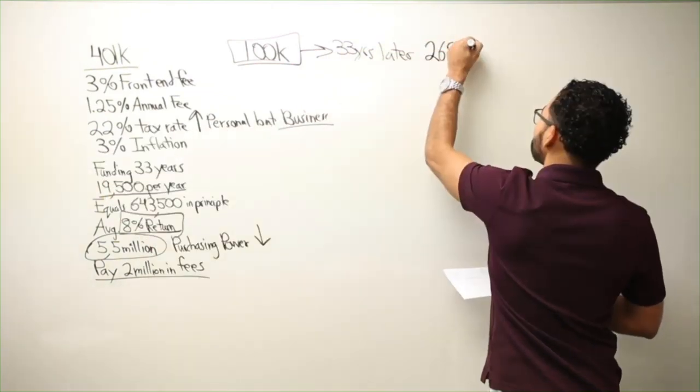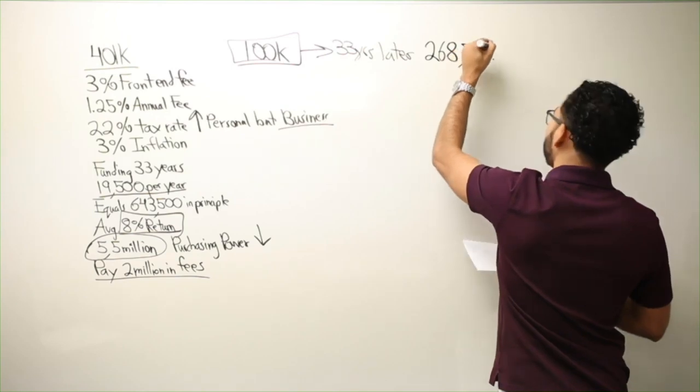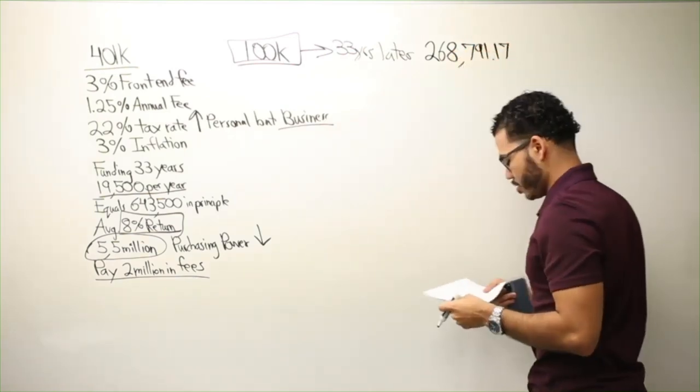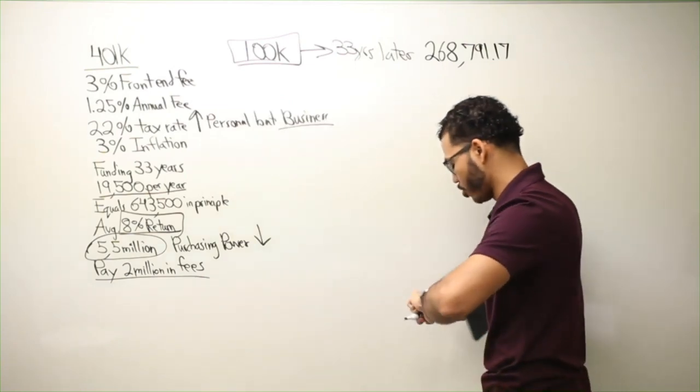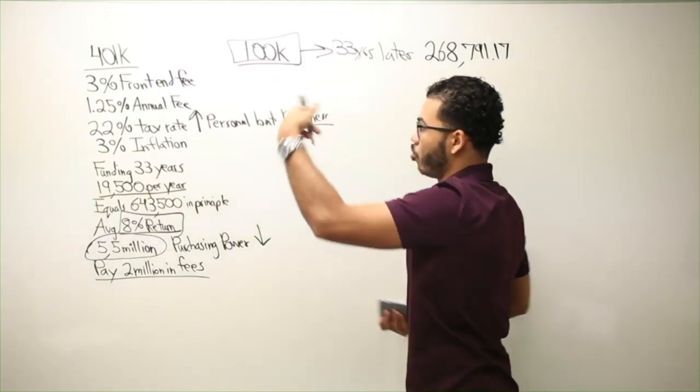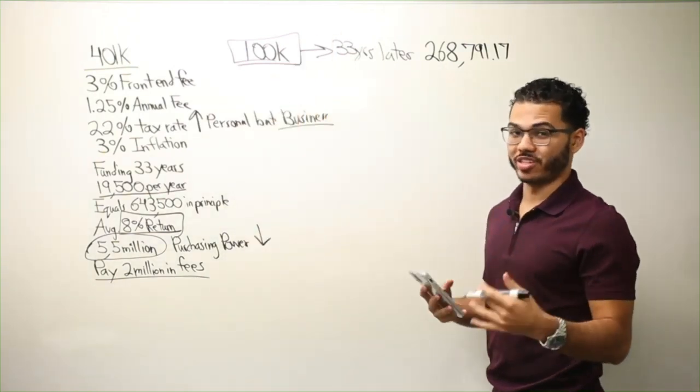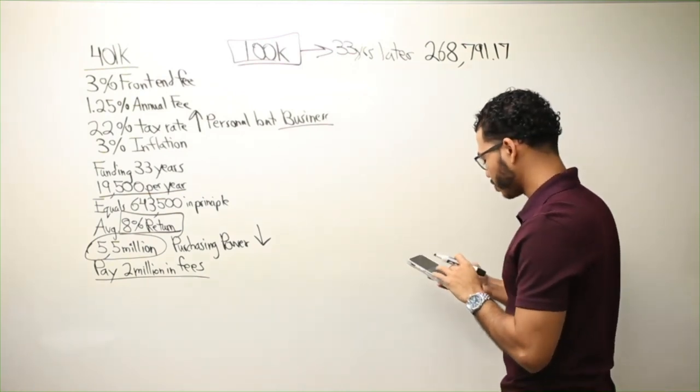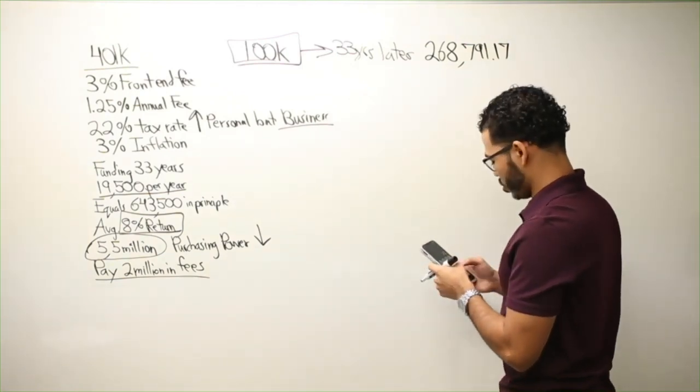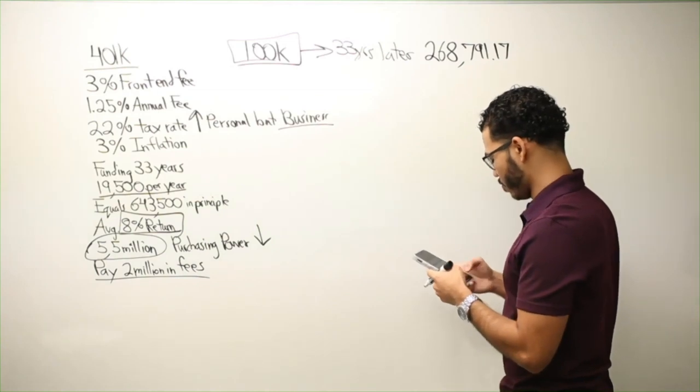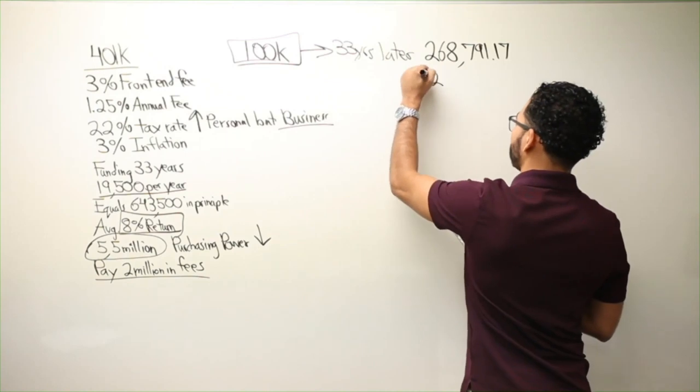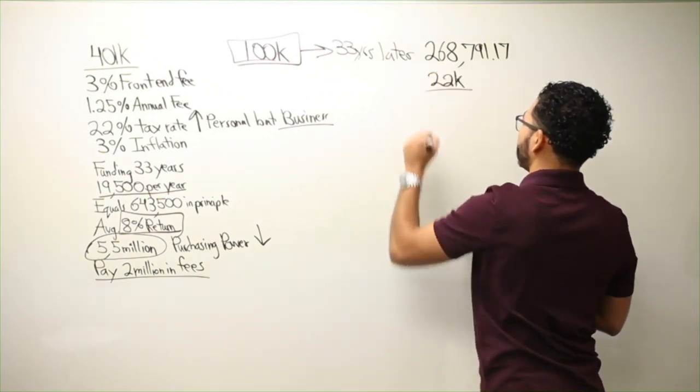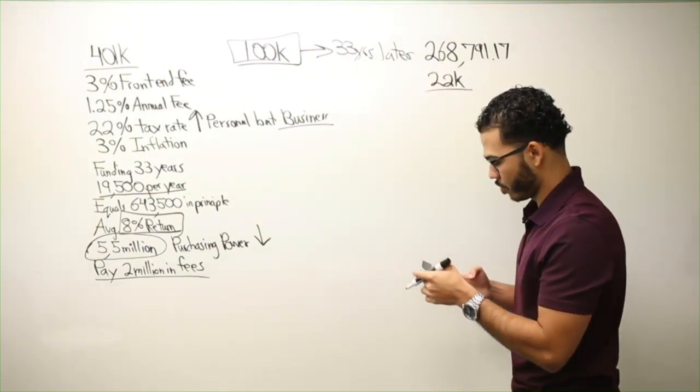$268,791, and 17 cents. So you'd have to withdraw that much money out per year to live on whatever $100,000 is worth today. So $268,791, 17, divided by 12, basically taking out $22,000 a month to live on. Granted, hopefully all your debts paid off by then, and you can use this money to basically live on.